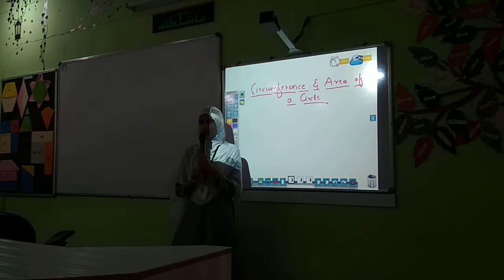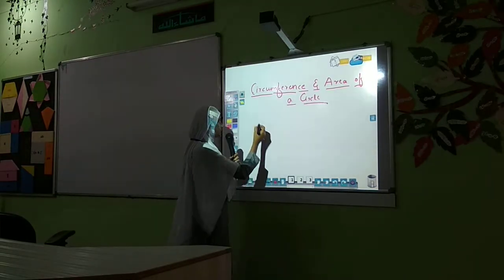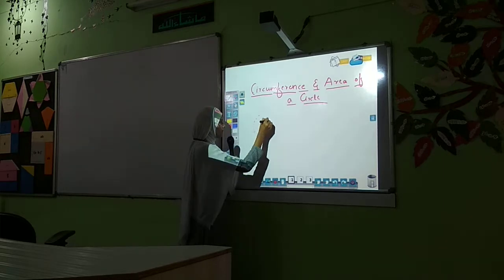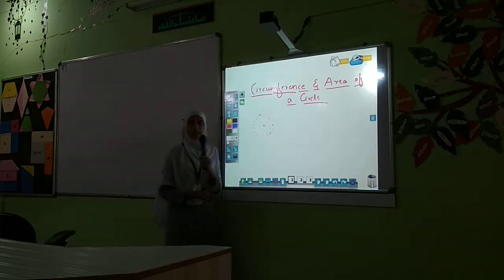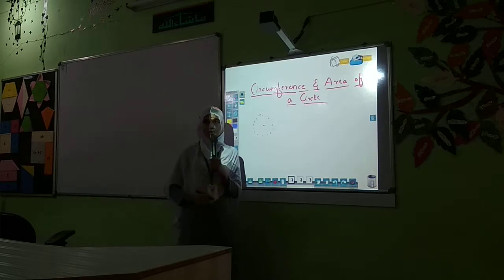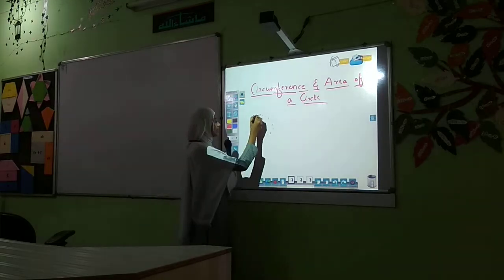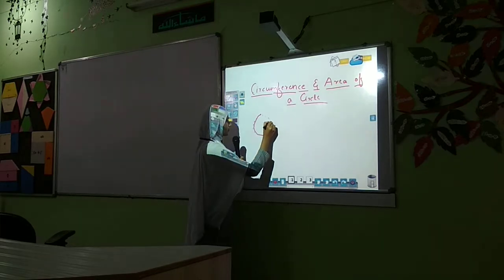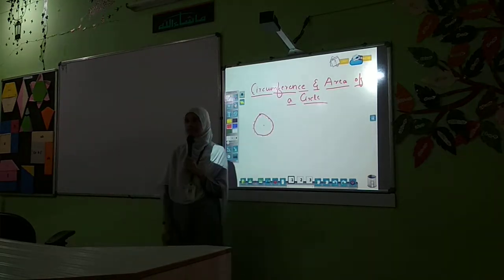First we have to know the meaning of circle. A circle is a collection of infinite points at a fixed, equidistant point. When we join these points, we will get a shape — and that shape is nothing but the circle.